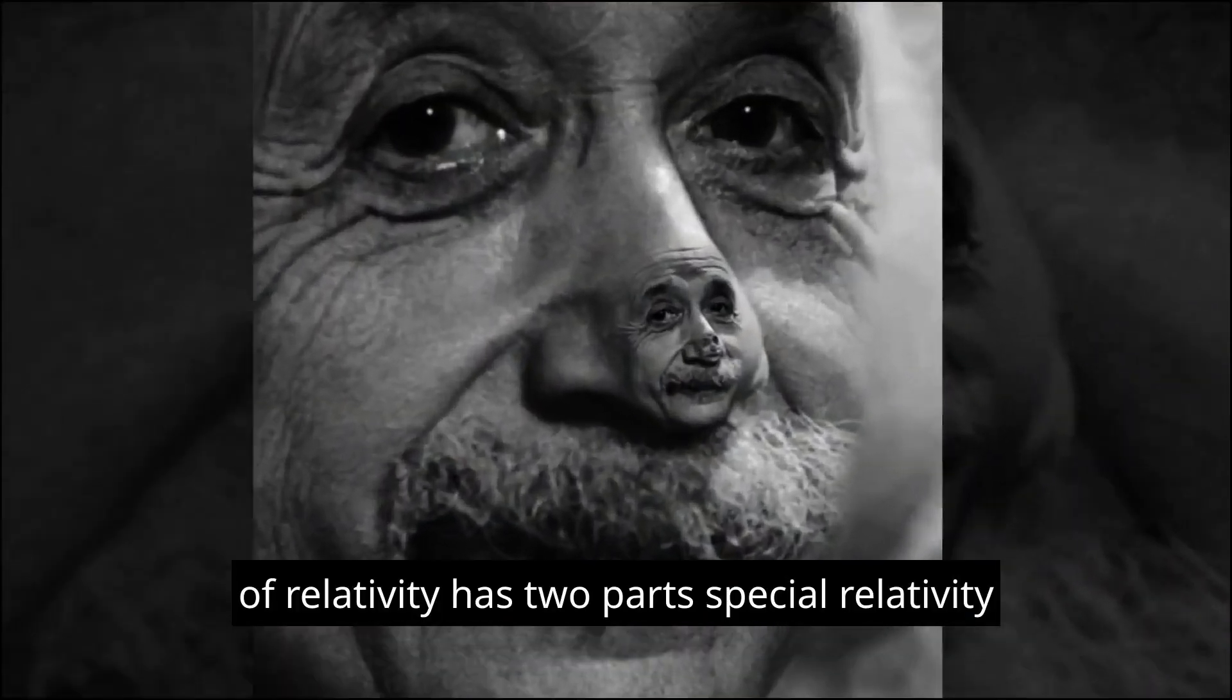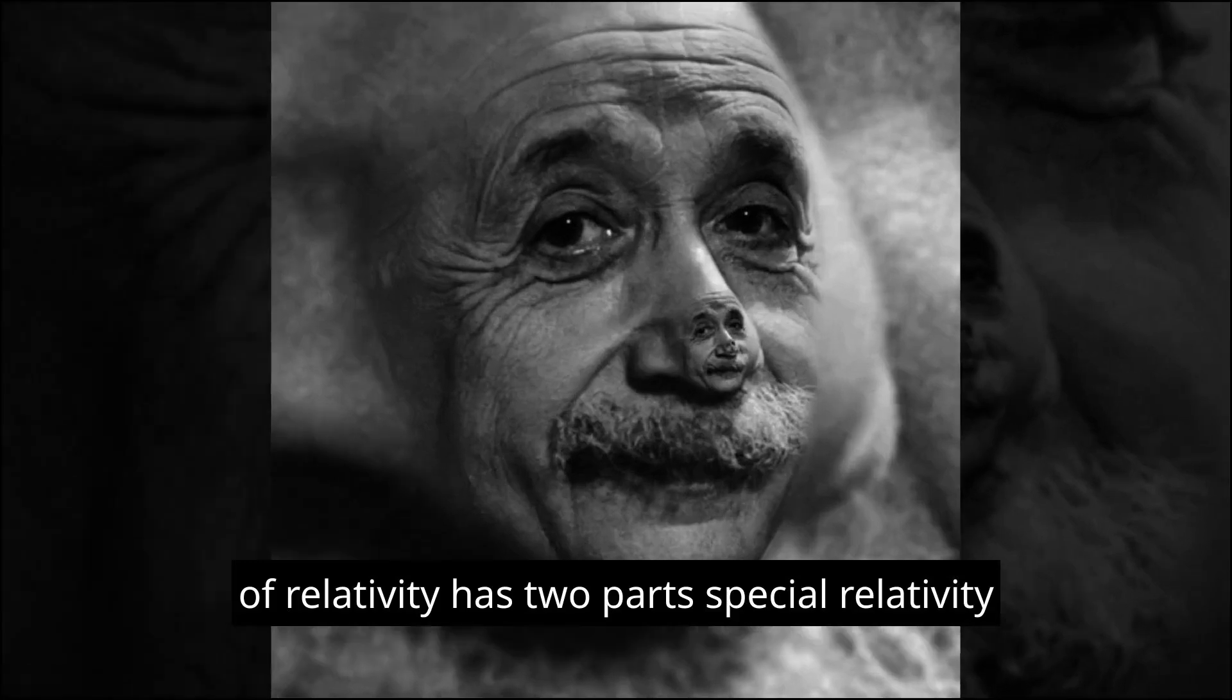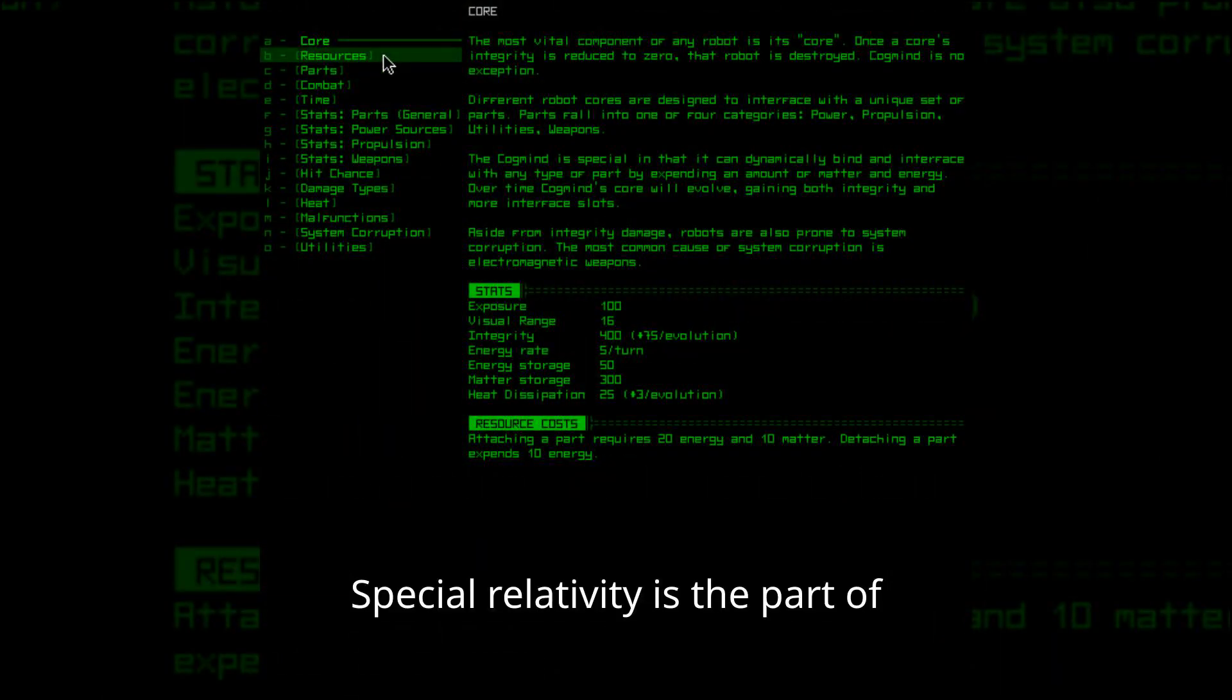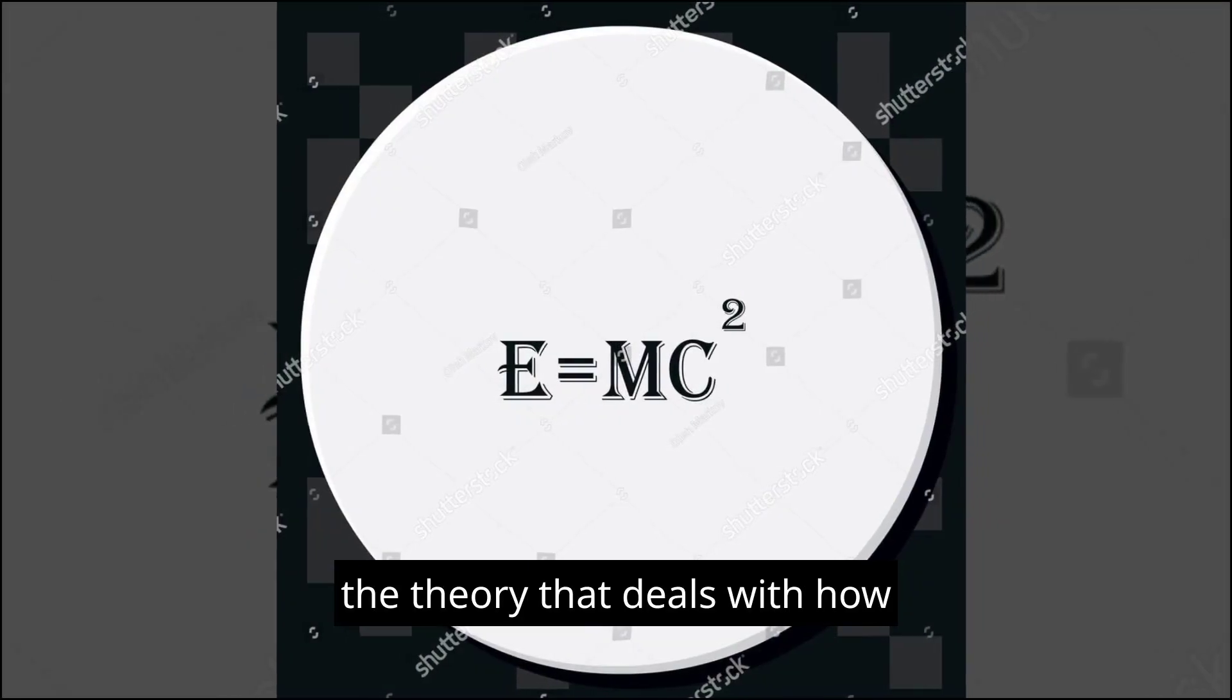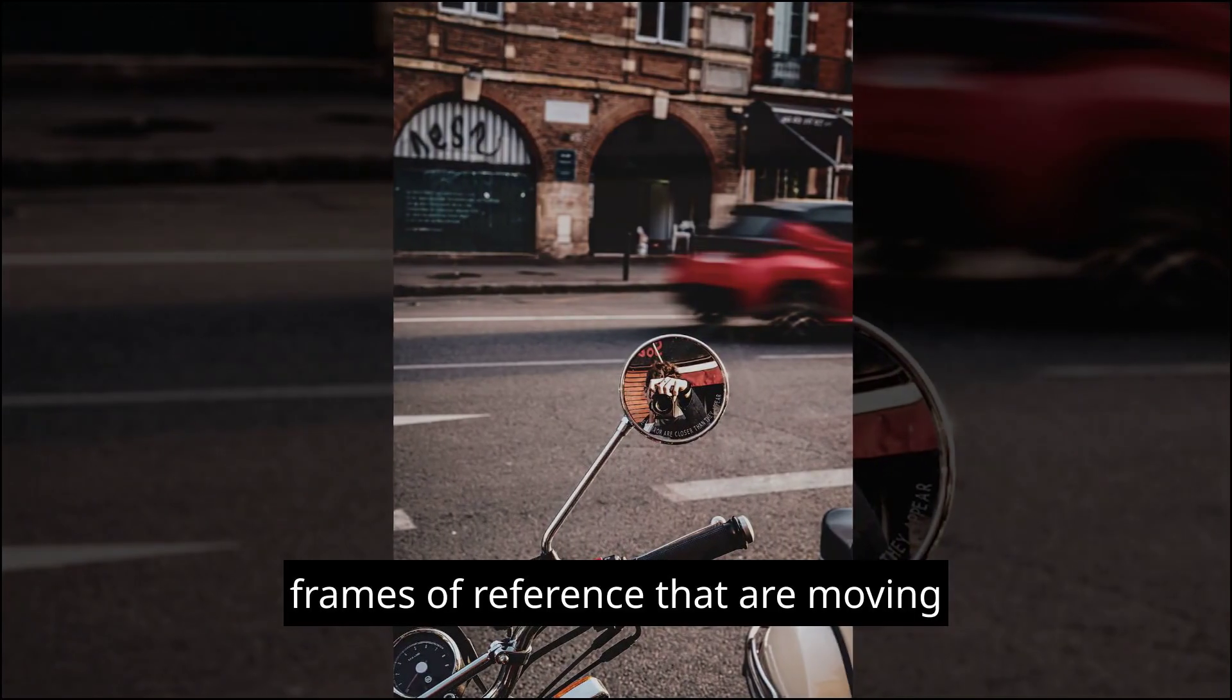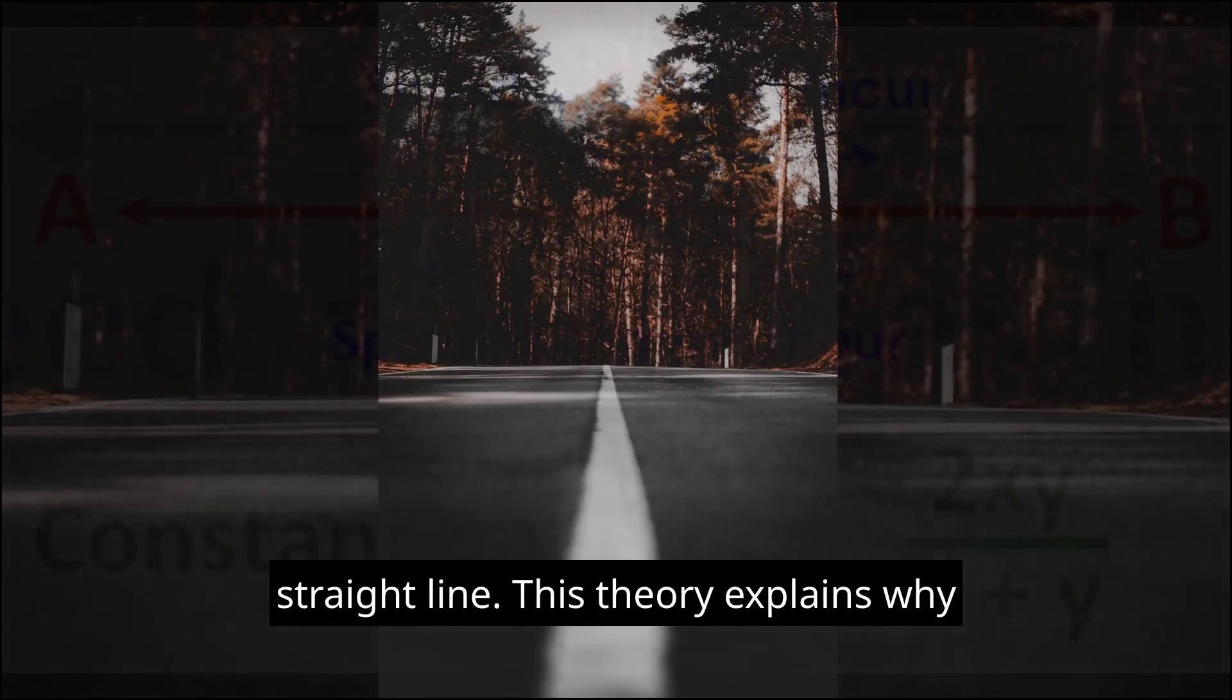The theory of relativity has two parts, special relativity and general relativity. Special relativity is the part of the theory that deals with how the laws of physics work in frames of reference that are moving at a constant speed in a straight line.